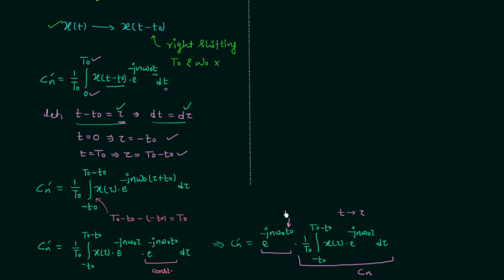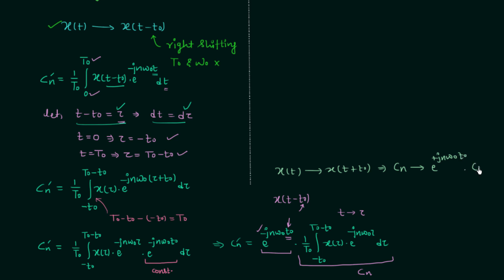So cn' = e^(-jnω₀t0) · cn, where t0 is the amount by which we are performing the shifting operation. For left shifting — if we have x(t + t0) — cn changes to e^(+jnω₀t0) · cn. This is the time shifting property of Fourier series: whenever you perform a shifting operation, you get an extra exponential term. t0 indicates the amount of shift, and the sign indicates left or right shifting, so we generalize it with ± .